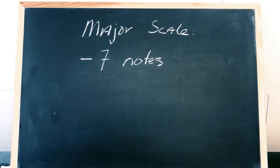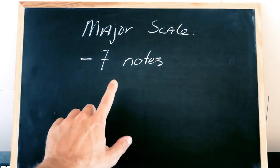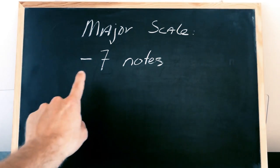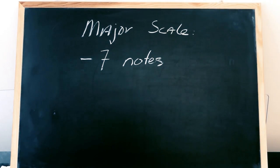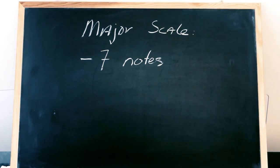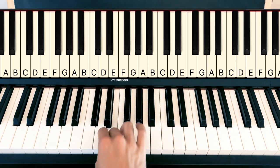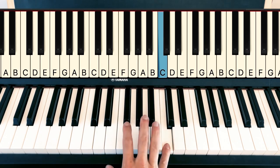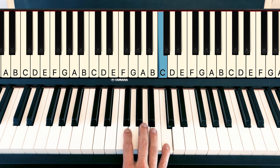So let me tell you the requirements for a major scale. The first requirement is that it has seven notes. Let's count that: one, two, three, four, five, six, seven, eight. That doesn't seem to work right.